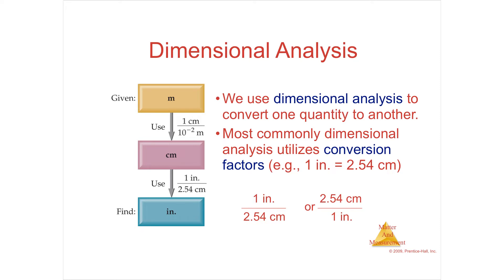There are very simple problems and more involved problems. The one thing to memorize from this section — and we'll use it a lot — is how to go from British units of length into metric units. One inch is equal to 2.54 centimeters. That's a definition, so those are exact numbers, and you can use them.